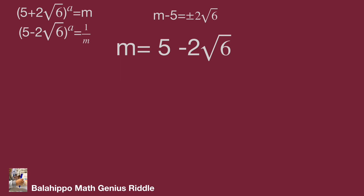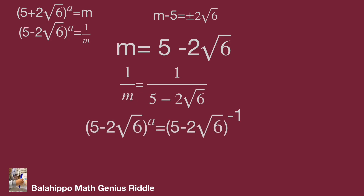If m = 5 − 2√6, then 1/m = 1/(5 − 2√6). Substituting 1/m by (5 − 2√6)^a, the equation becomes (5 − 2√6)^a = (5 − 2√6)^(−1), so a = −1.